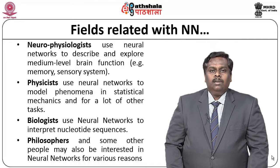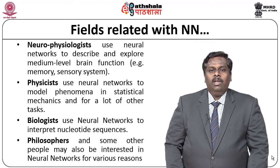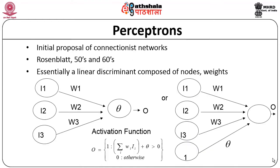Philosophers make use of neural networks for understanding the linkage between various individuals as well as for logical reasoning purposes. Now let us understand what a perceptron is from a neural network perspective. A perceptron is a connectionist network — you have multiple nodes that are interconnected by means of links. It is essentially a linear discriminant composed of nodes and weights.